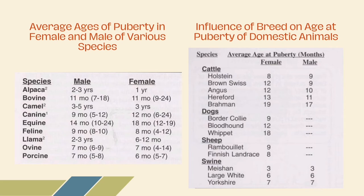The first figure shows the average ages of puberty in both sexes of various species, while the other figure shows the influence of breed on age at puberty of domestic animals. The breed of the animal has an important role on the age at which puberty is attained in female and male. Bos indicus breeds may not reach puberty until 24 months of age.